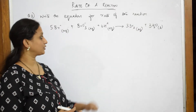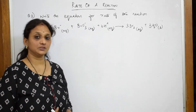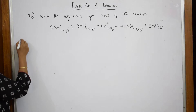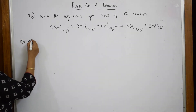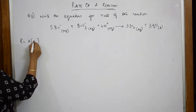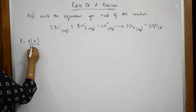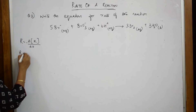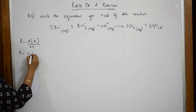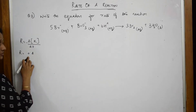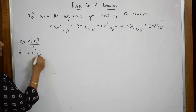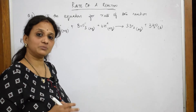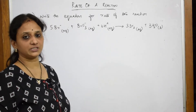Let us see one more question on rate of the reaction. Basically, what is rate of the reaction? As we have learnt, rate of the reaction is the change in concentration of the reactant per unit time. This is minus for the reactant. If I write for the product, it is plus — the increase in concentration of the product divided by unit time. They have given me this particular reaction, and this is one more way of questioning your rate of the reaction.